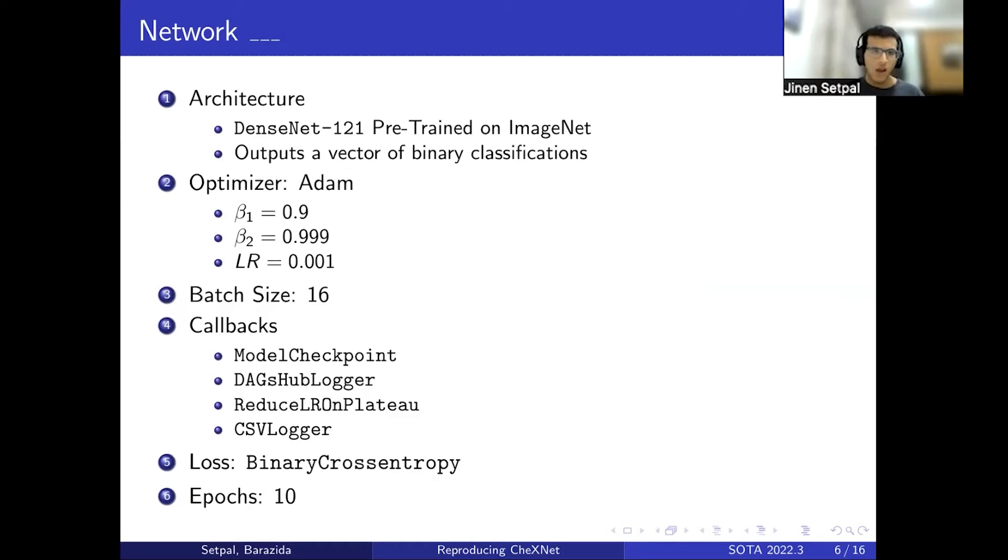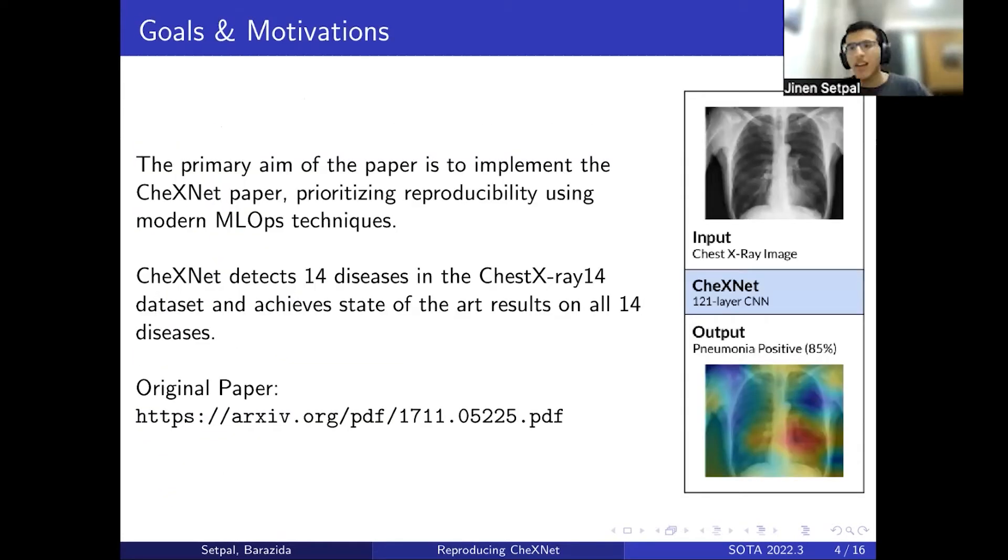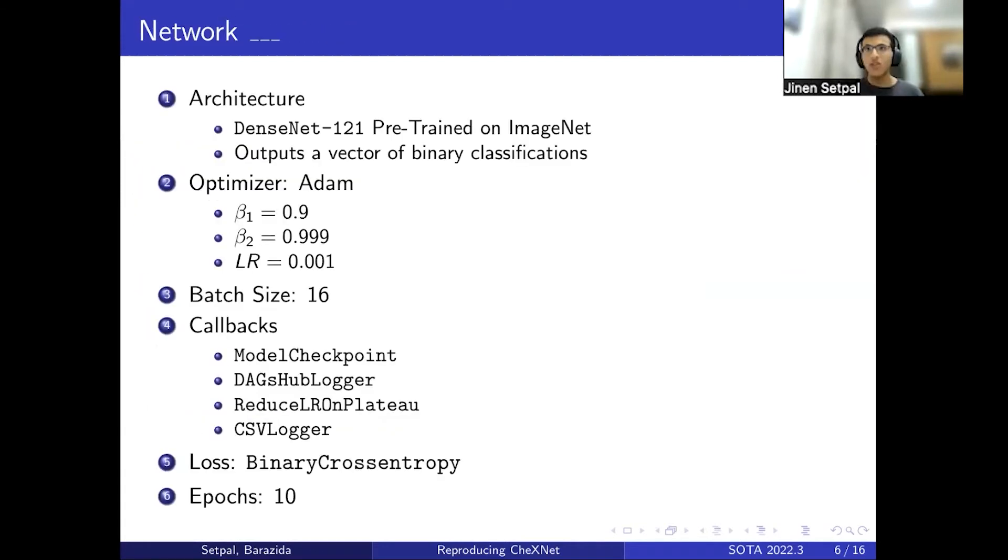The batch size is 16 with four different callbacks: model checkpoint, DagsHub Logger for logging metrics and evaluation files, ReduceLROnPlateau with a patience of one epoch which reduces learning rate by a factor of 10 if accuracy does not improve, and CSV Logger. We use binary cross-entropy loss and train the model for 10 epochs.